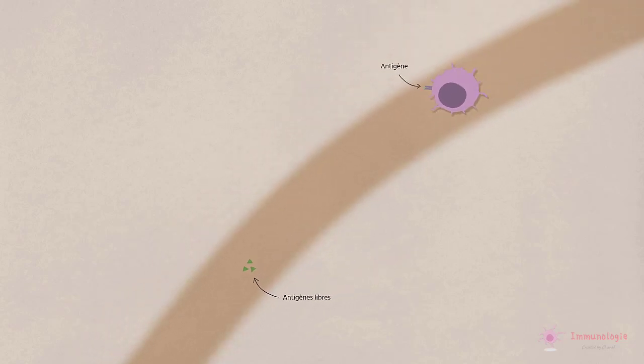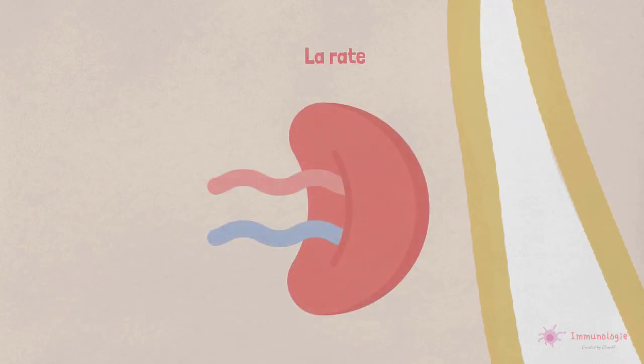Ainsi, la lymphe contient un échantillon de tous les antigènes solubles et associés aux cellules présentes dans les tissus. Les antigènes sont concentrés dans les ganglions lymphatiques, qui agissent comme des filtres pour la lymphe avant qu'elle n'atteigne le sang. En revanche, les antigènes transmis par le sang sont capturés principalement dans la rate.